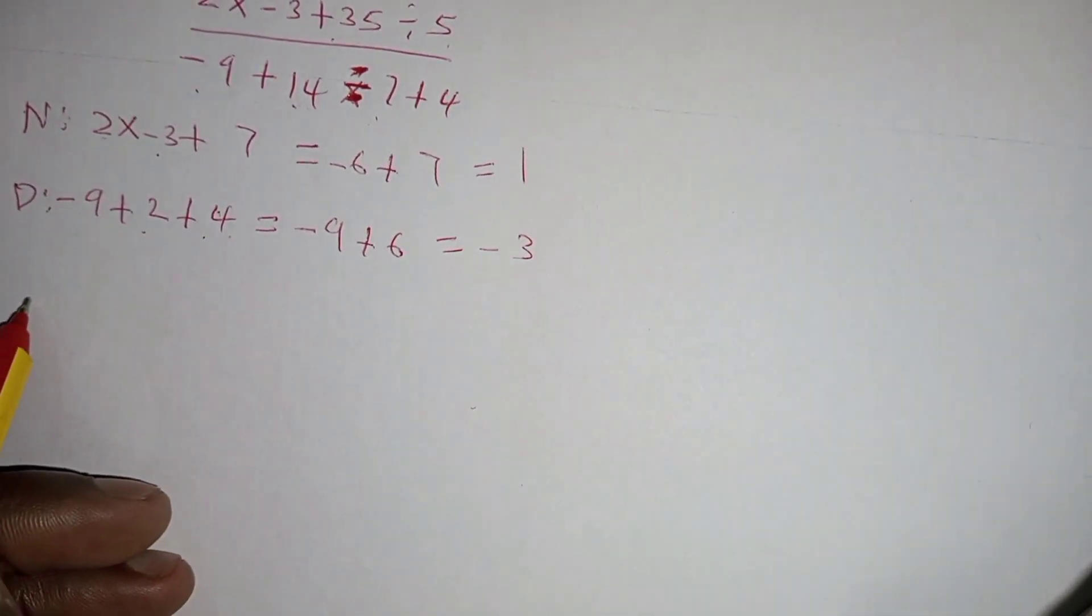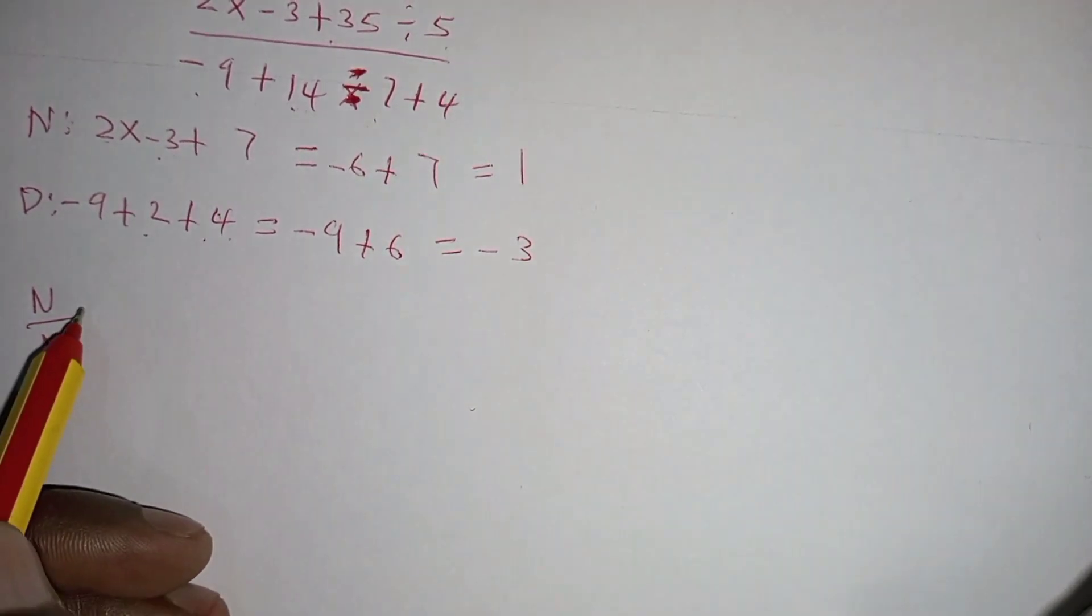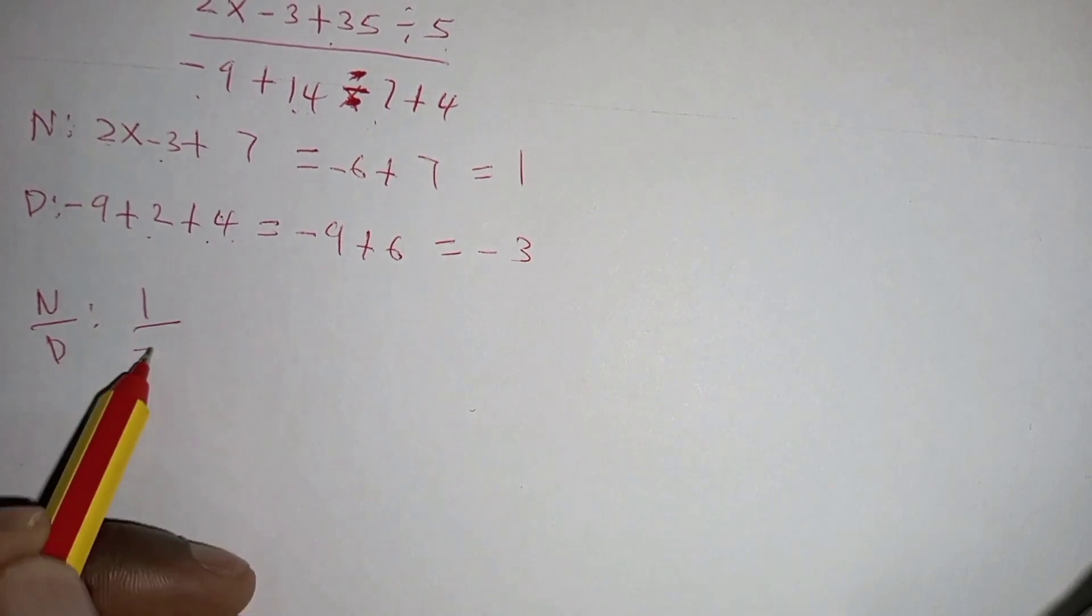So you have the numerator divided by the denominator, which will give us 1 divided by negative 3.